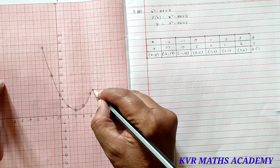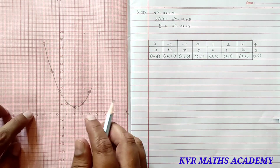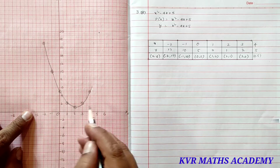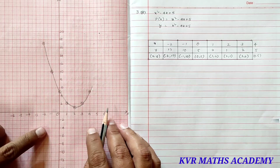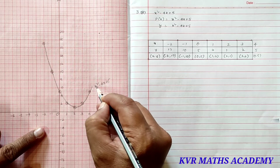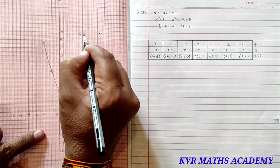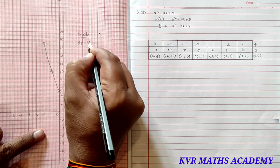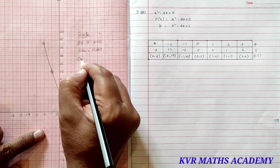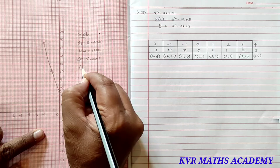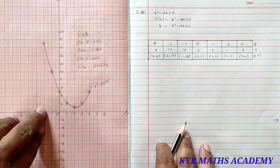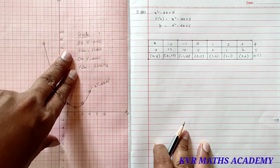After joining all points, this curve does not intersect the x-axis. That's why the polynomial x² - 4x + 5 has no zeros. Write down the scale: on x-axis, one centimeter equals one unit; on y-axis, one centimeter equals two units. We must write the scale in exams or we lose marks.